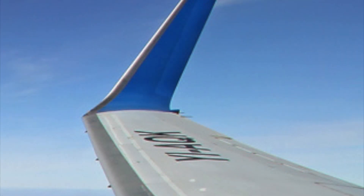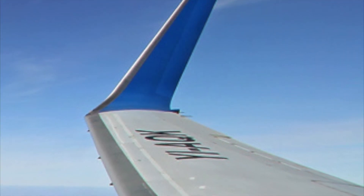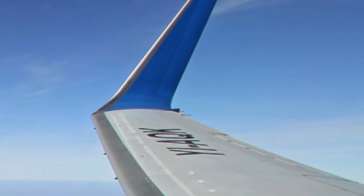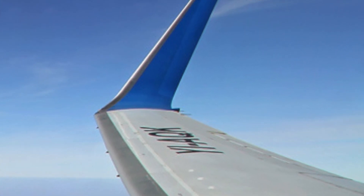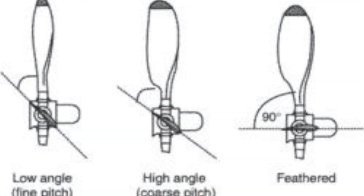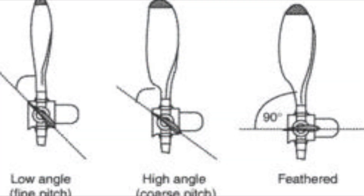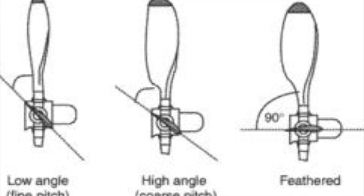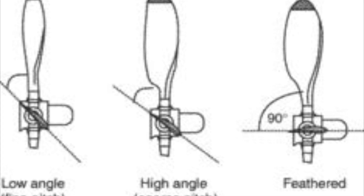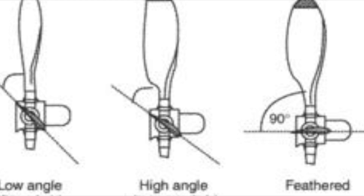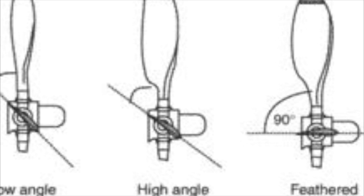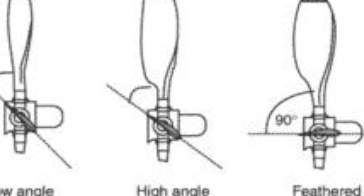Winglets generate lift perpendicular to the relative wind, therefore generating a bit of forward lift and reducing drag. Feathering a propeller can also help reduce the amount of drag that a propeller creates. You can make it so that the least amount of propeller is facing the wind. When you feather a propeller, you straighten it out, therefore reducing drag.